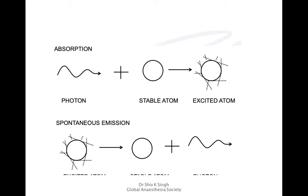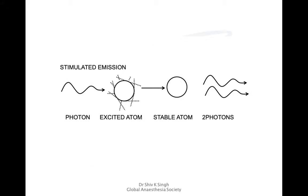Here is how it works: you have a stable atom and throw energy onto it in the form of a photon — it becomes an excited atom and moves to a higher energy level. When it returns to its resting position it releases a photon. But if you provide another photon before the excited atom returns to rest, it releases two photons of the same wavelength that are in phase — coherent — and can travel long distances. This is how laser beams are produced.